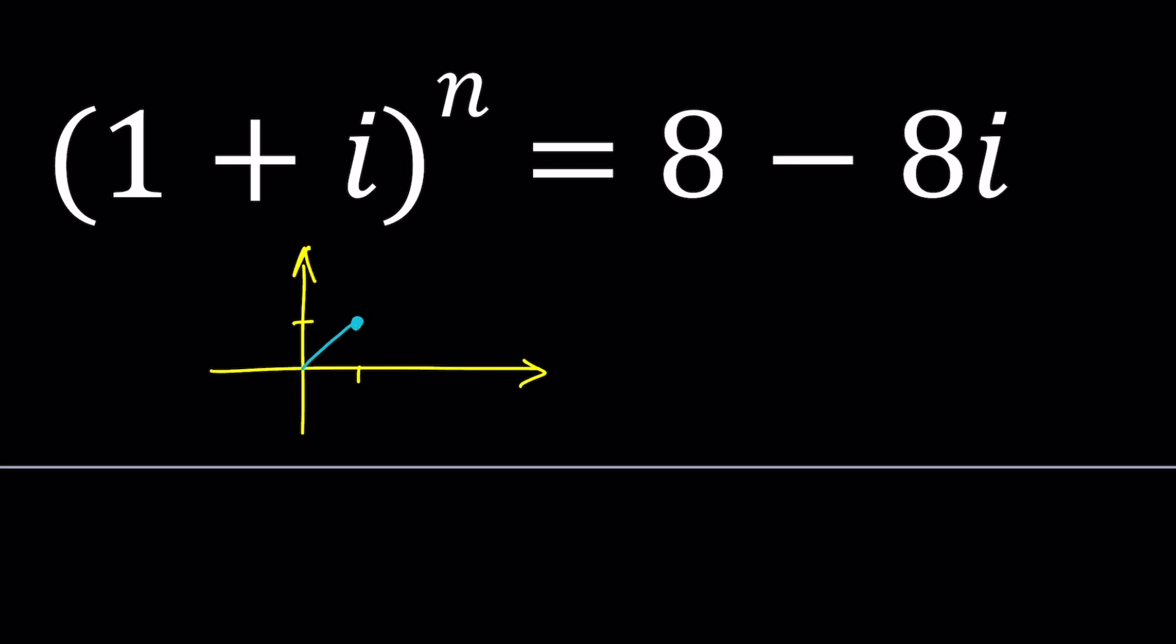This is 1, this is i, this is real, this is imaginary. Make sense?